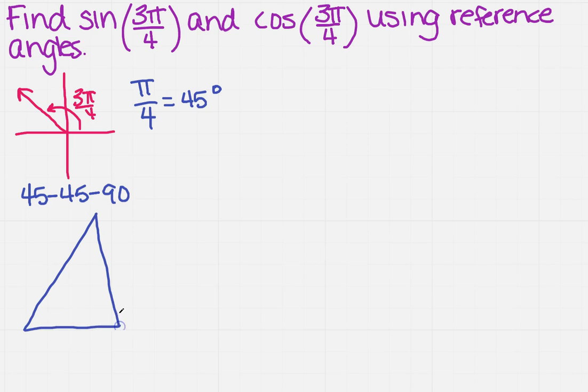Well, if we recall, this is a right triangle. If this angle is 45 and this angle is 45, then our legs are 1 and our hypotenuse is the square root of 2.